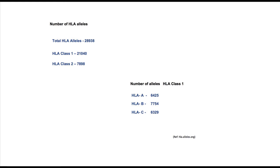Up to now, more than 28,000 total HLA class 1 and class 2 alleles have been identified. Of these, HLA class 1 alleles are around 21,000, with more than 6,000 alleles identified at each locus. Similarly, total alleles for HLA class 2 are around 8,000.